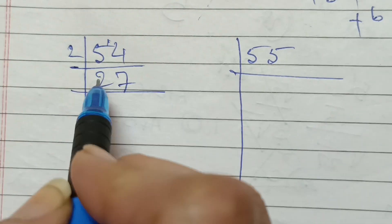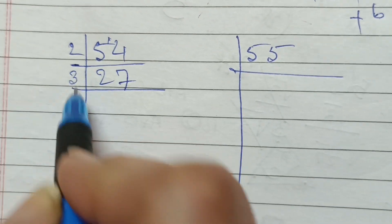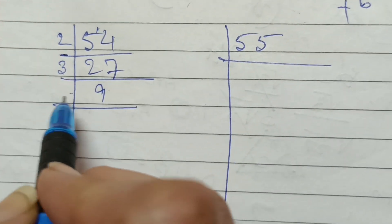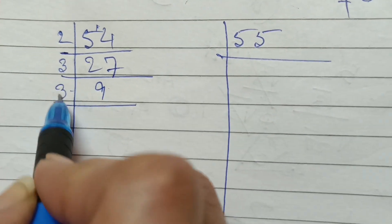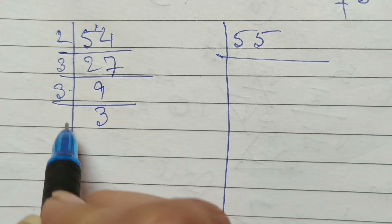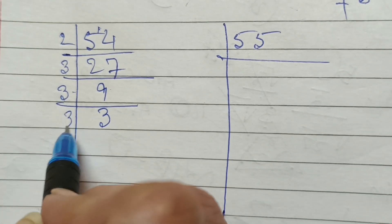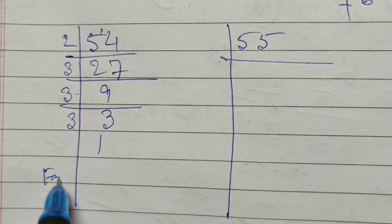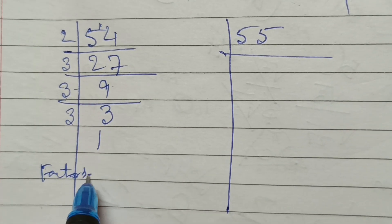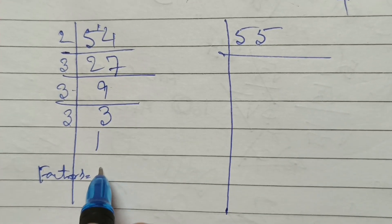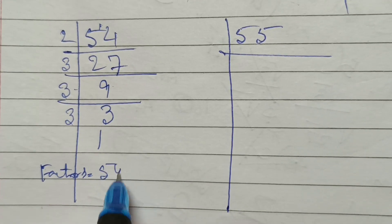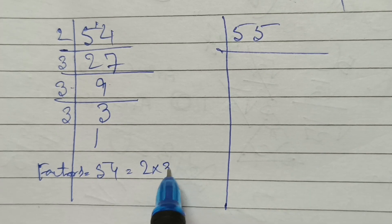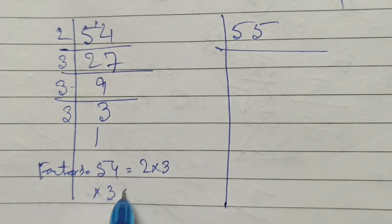Again, 27 divided by 3, 9. Again, 9 divided by 3. 3 divided by 3. So, the factors of 54 are 2 into 3 into 3 into 3.